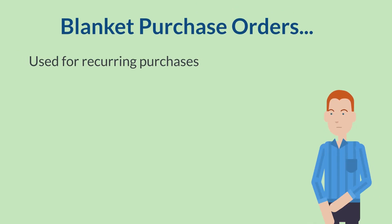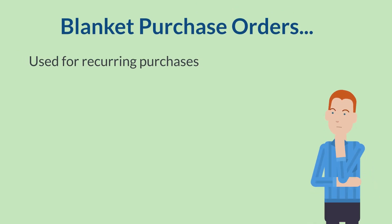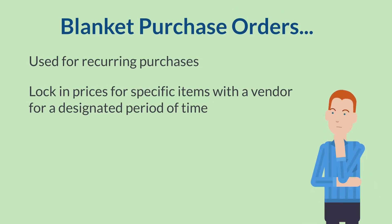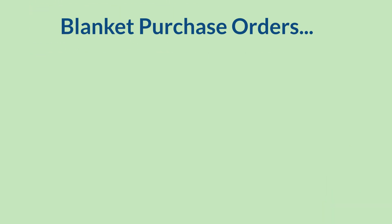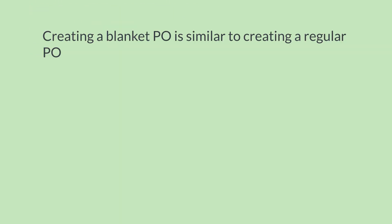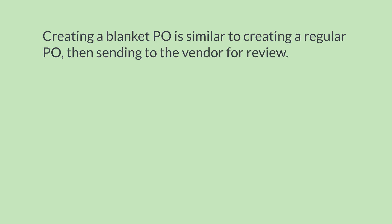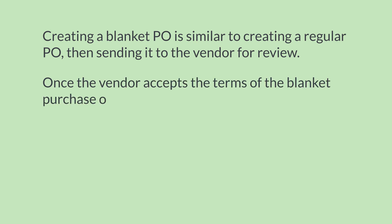Blanket purchase orders are used for recurring purchases. They lock in prices for specific items with a vendor for a designated time period. To start out, you would create a new blanket purchase order similarly to how you would create a regular purchase order, then send it to your vendor. Your vendor will look over the terms that you set and decide whether to accept it or not. Once your vendor accepts the terms, those terms become binding for the set time period.